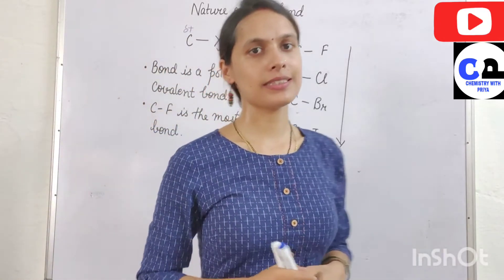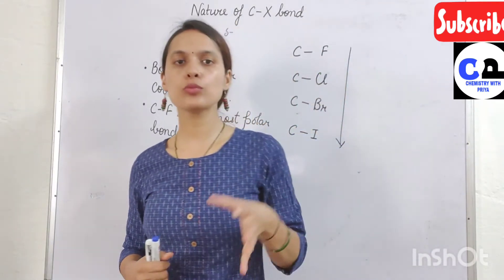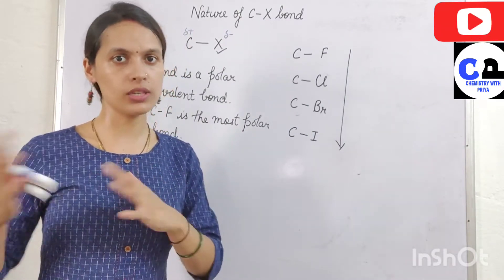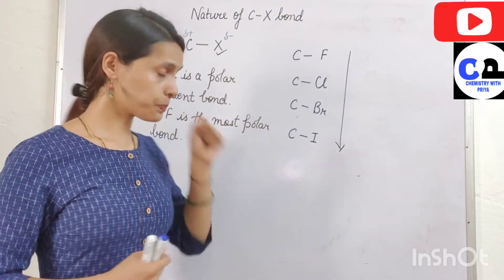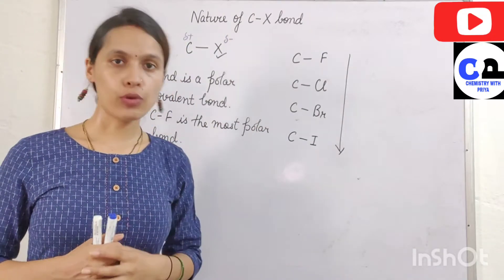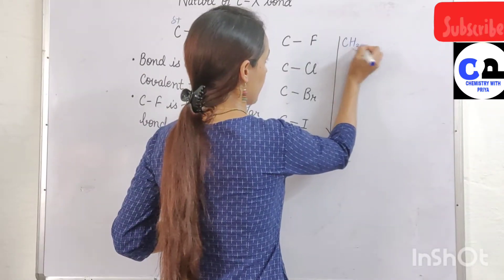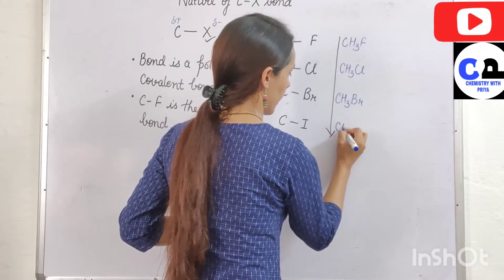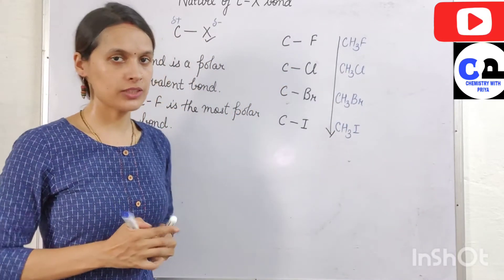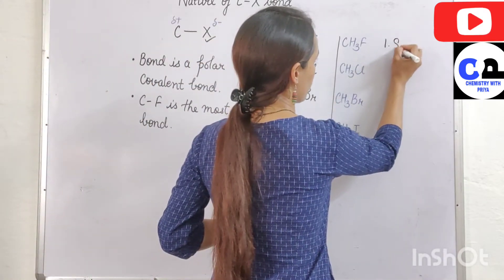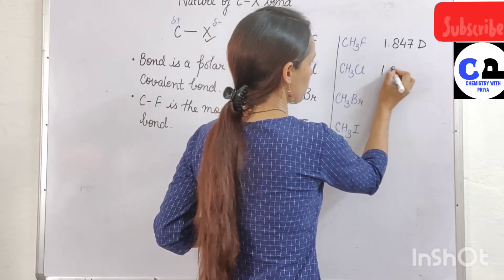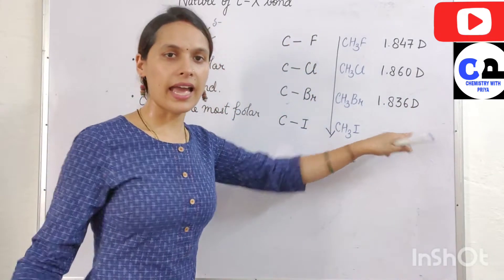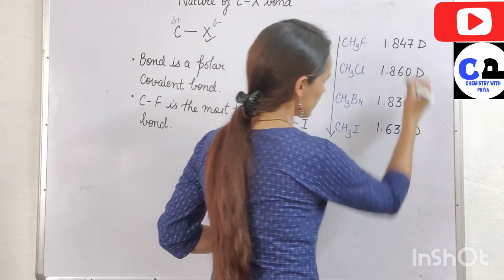In 11th class, we studied the term dipole moment. Dipole moment is basically due to the polarity in the molecule. If these bonds are polar, obviously dipole moment is there. The dipole moment values for CH₃F, CH₃Cl, CH₃Br, and CH₃I are 1.847 D, 1.860 D, 1.836 D, and 1.636 D respectively.